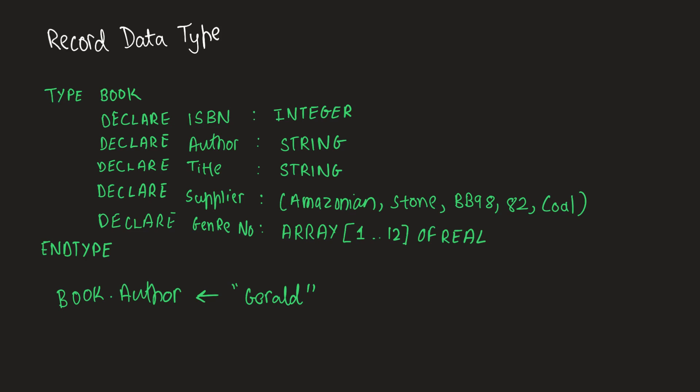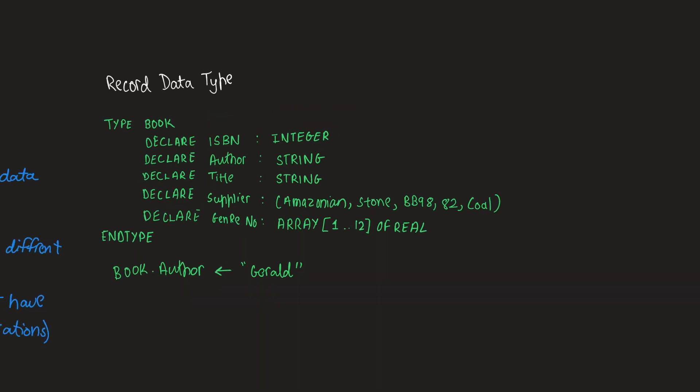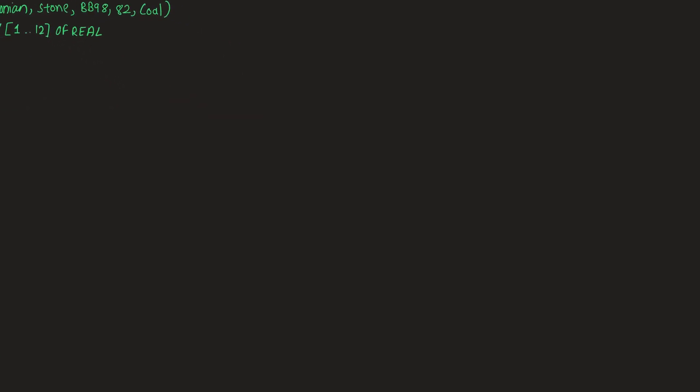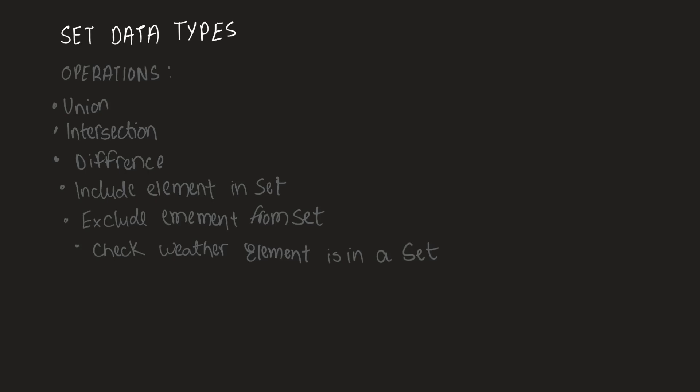Set data types are in fact pretty easy. Set data types store a finite number of different values that have no order, and they support mathematical operations. The operations are as follows: union, difference, intersection, include an element in the set, exclude an element in the set, or check whether an element is in the set.